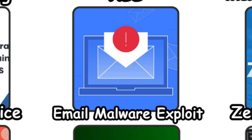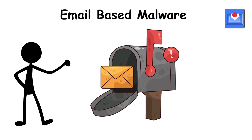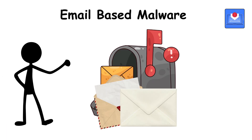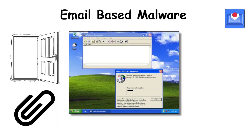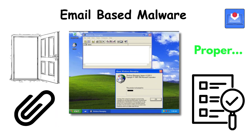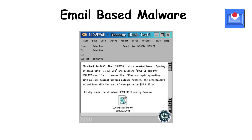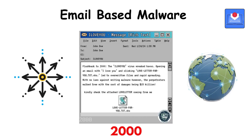Email-based malware. Imagine a mailbox that accepts every letter, even ones with hidden traps. Old Windows email clients opened attachments without proper checks. This flaw helped the ILOVEYOU malware in 2000 spread globally within hours. It was trust given to dangerous messages.